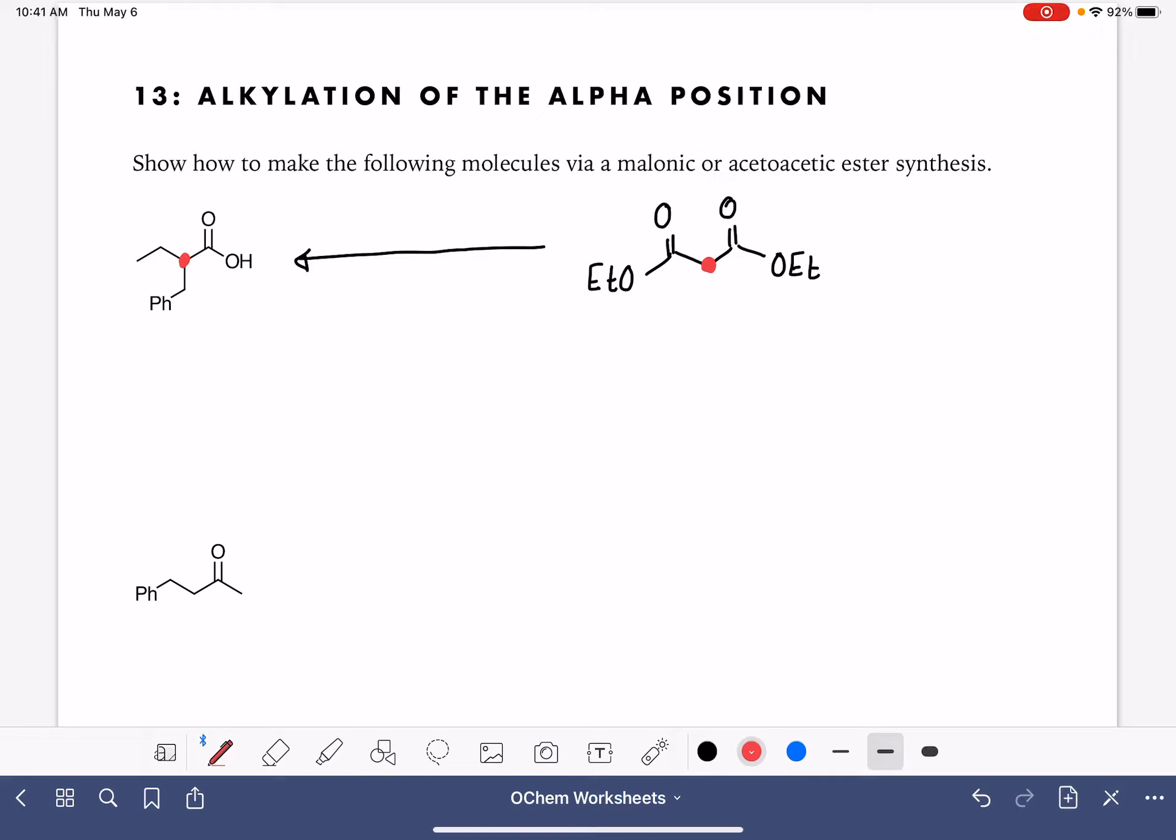This is going to be either a three-step process or a five-step process, depending on how many alkyl groups you want to put on your alpha carbon. If you want to put two alkyl groups, then it's going to be a five-step process. The first step is using ethoxide. We always use ethoxide to match the ethoxy group. We use ethoxide to deprotonate the alpha carbon.